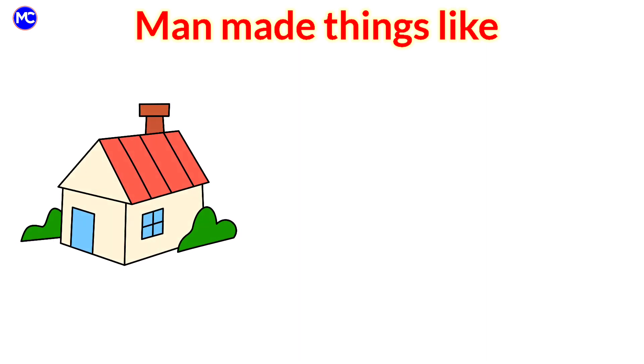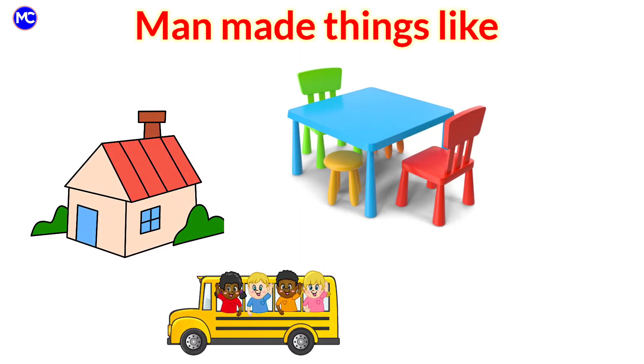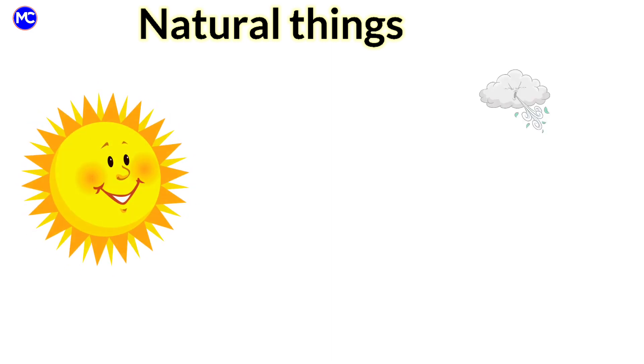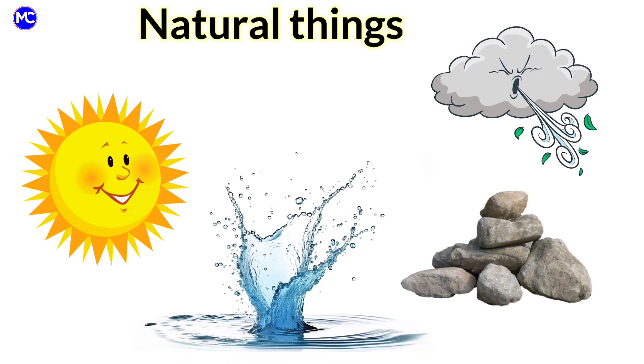Non-living things: man-made things like house, bus, chair, table and ball. Some are natural non-living things like sun, wind, water and stone.